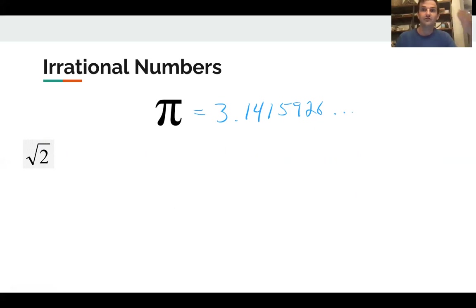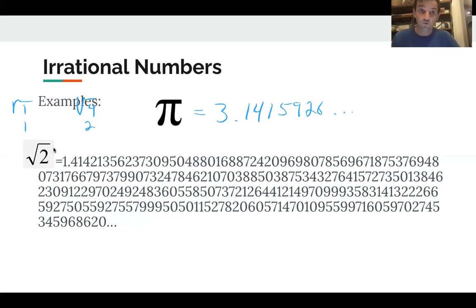And the other example of an irrational number is a number like the square root of 2. Which, if you remember from our lesson on square roots, the square root of 2 is, well, 2 is not a perfect square, right? So it would be between the square root of 1 and the square root of 4. So the square root of 1 is 1, the square root of 4 is 2. So the square root of 2 would be somewhere between 1 and 2. So I just looked up and wrote out the first 100 or so digits.